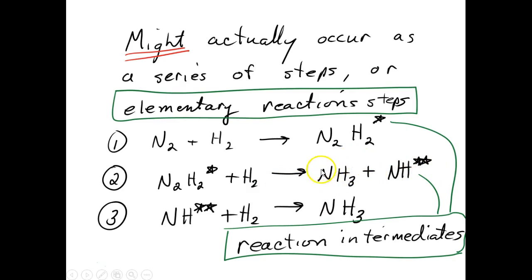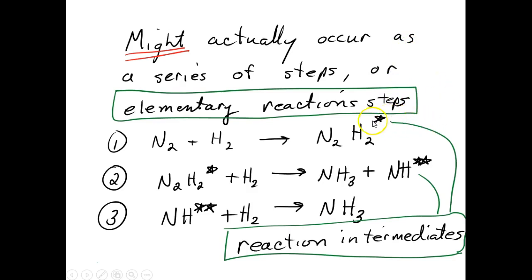This one is nice and stable. This one, not so much. So that thing, as soon as it bumps into a hydrogen, will form this thing. We call this series of steps the reaction mechanism, and each step is called an elementary reaction step. These little starred things that appear and then later are eaten up and disappear are called reaction intermediates.